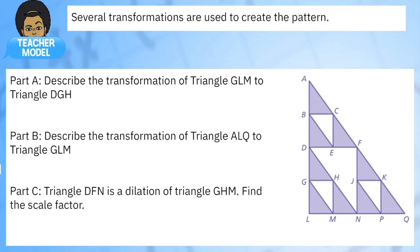My big advice: chunk, chunk, chunk. In this first problem we're going to describe the transformation from triangle GLM to triangle DGH. Let's draw that out. Here's GLM — there's the original triangle — and here's DGH. How could I go from one to two? This looks like just a slide.